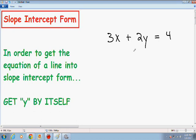So we have 3x plus 2y on the left side, so we just want to get y by itself, so we need to get rid of this x. So the first thing I am going to do is subtract 3x from both sides.